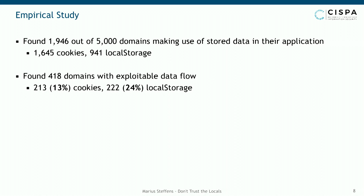If you pay close attention, these numbers don't add up, which simply means some sites have both a vulnerable cookie and a vulnerable local storage flow. Particularly interesting: out of the 941 sites making use of persistent local storage data, actually every fourth makes use of it incorrectly such that an attacker could exploit it.